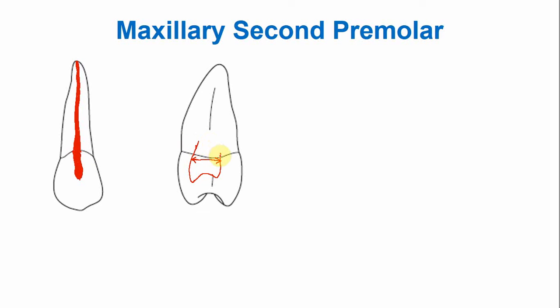Similarly with the canal as well, there is very little demarcation between the pulp chamber and the canal when you look at the endodontic anatomy from the proximal aspect.